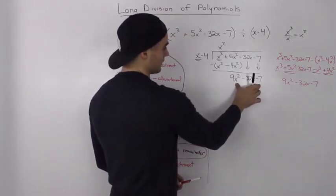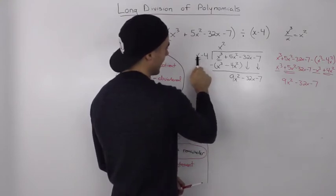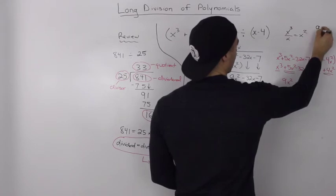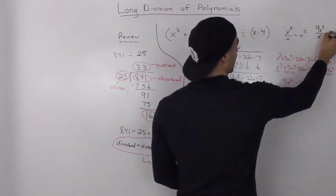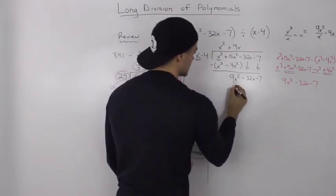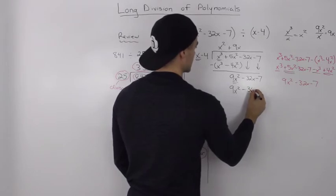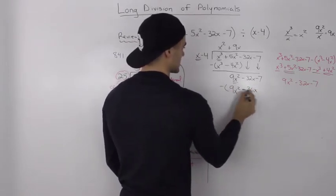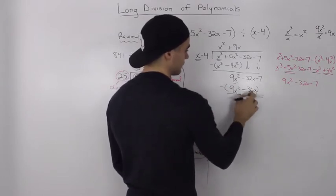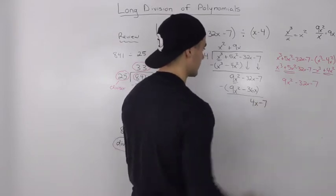Once you get to this point, you repeat the process. Check how many times does x go into this new expression. x goes into 9x squared, 9x times — because 9x squared divided by x is 9x. So we write 9x, then multiply 9x by x minus 4: 9x times x is 9x squared, and 9x times negative 4 is negative 36x. Then we subtract this whole expression: 9x squared minus 9x squared is 0, and negative 32x minus negative 36x equals negative 32x plus 36x, giving us 4x. Bring the 7 down, so we have 4x minus 7.